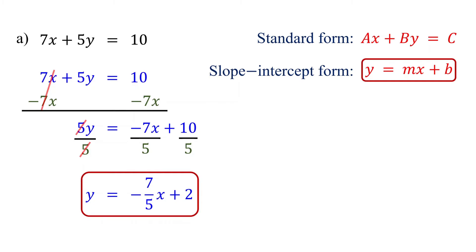In this form, the coefficient of x is the slope, and the y-intercept is the point 0, b. So, the slope of our equation is negative 7 over 5, and the y-intercept is 0, 2.